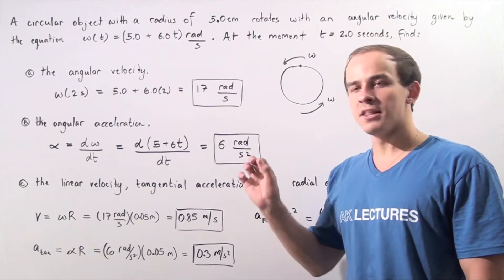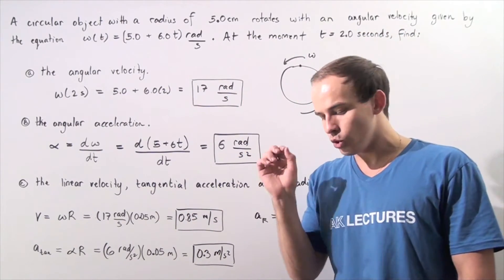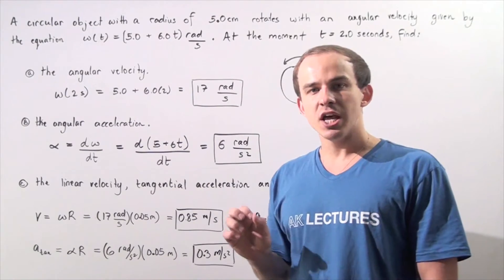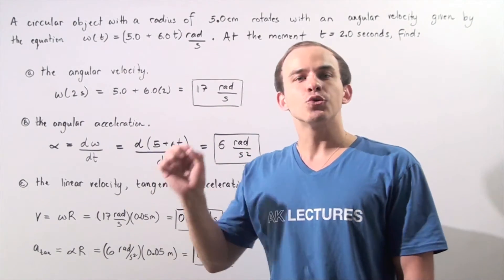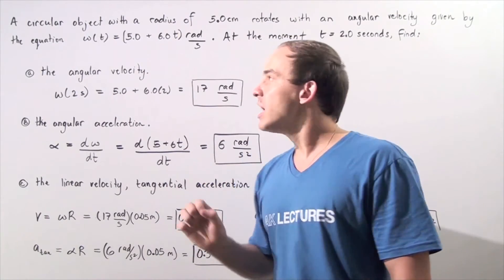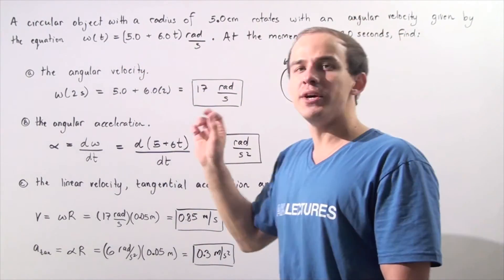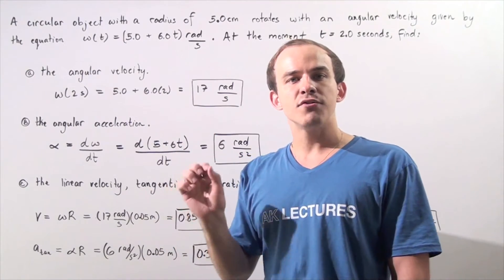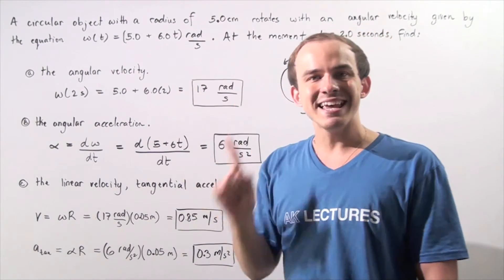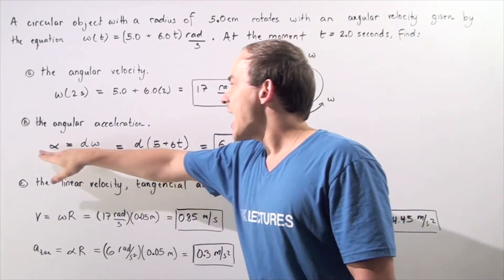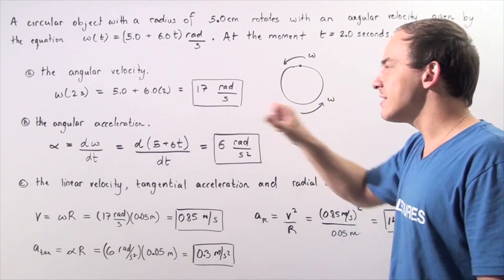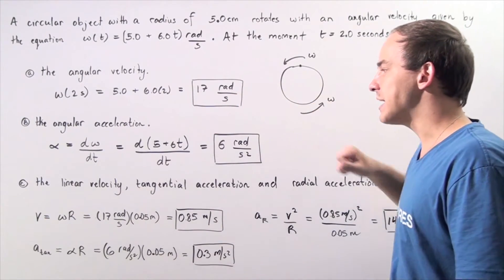Now let's move on to part B: the angular acceleration at t equals 2 seconds. Recall that by definition, the angular acceleration of an object is the derivative of angular velocity with respect to time. Taking the derivative of 5 plus 6t, the 5 goes to 0 and the 6t becomes 6. So at t equals 2 seconds, the angular acceleration is 6 radians per second squared.